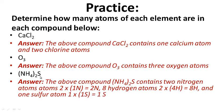Ammonium sulfide, (NH4)2S — a tricky one. The 2 outside the parentheses tells us we have two nitrogen atoms (2 × 1), eight hydrogen atoms (2 × 4), and one sulfur atom.